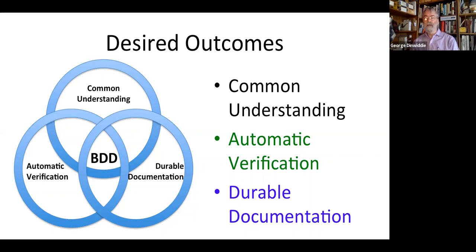What examples will make that clear? We want automatic verification, but not just passing tests. We want to verify that we're actually building durable documentation. And to make that documentation durable, if you read it a year, five years from now, it needs to communicate the intent. So that's very important.